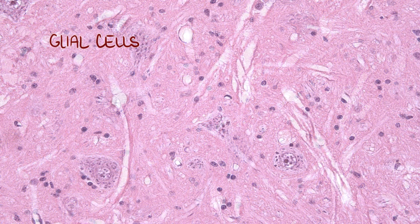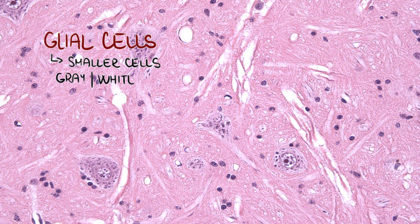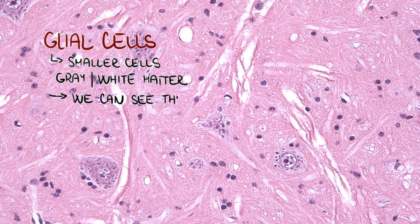Glial cells are smaller cells located in both gray and white matter. They have several functions and they look different. We can only see their nuclei in hematoxylin-eosin staining.